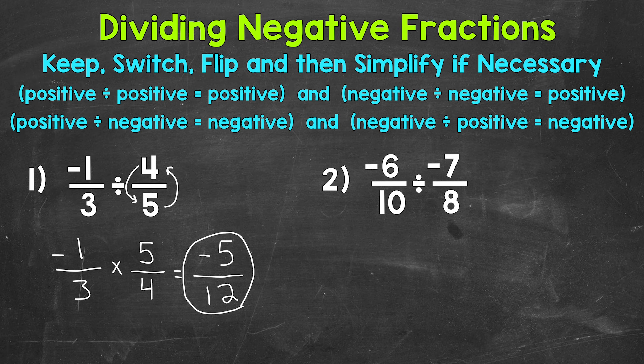Let's move on to number two, where we have negative six tenths divided by negative seven eighths. So we have a negative divided by a negative. We are going to end up with a positive result. So let's keep, switch, flip.